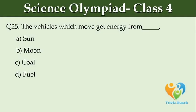The vehicles which move get energy from dash. Option A: Sun, Option B: Moon, Option C: Coal, Option D: Fuel.